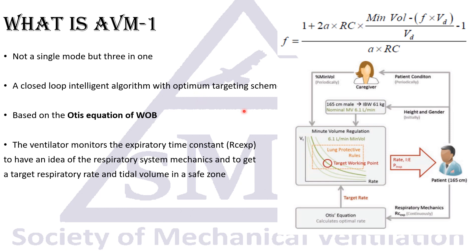I encourage you to read the taxonomy by Chatburn. AVM1 is based on the Otis equation, which was later modified by Mead — the Otis-Mead equation of the work of breathing. That equation defines a window: the range of respiratory rates and tidal volumes associated with the least work of breathing. We either have a very large tidal volume with a very low respiratory rate, or very shallow breaths with a low tidal volume and very high respiratory rate. The ventilator monitors the expiratory time constant to adjust its target respiratory rate and tidal volume to be in that safe zone.